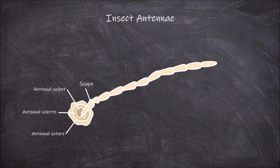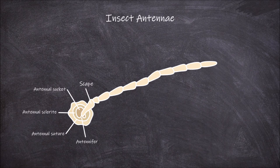The socket also has a pivot-like process called the antennifer. The antennifer supports the scape and allows for the movement of the antennae.